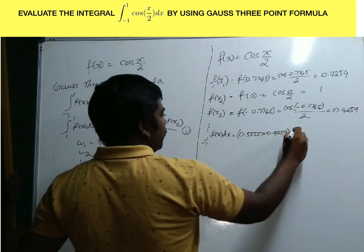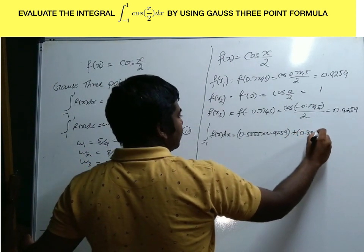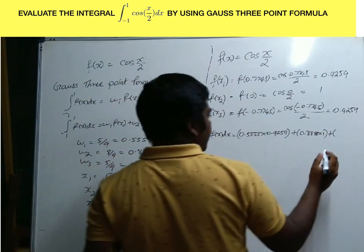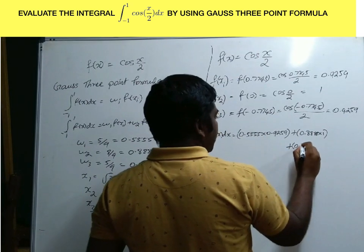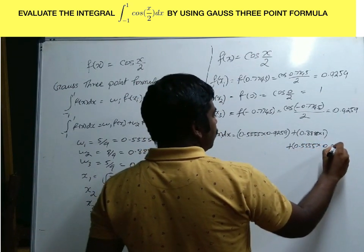Plus w2 times f(x2), which is 0.8888 times 1, plus 0.5555 times 0.9259.